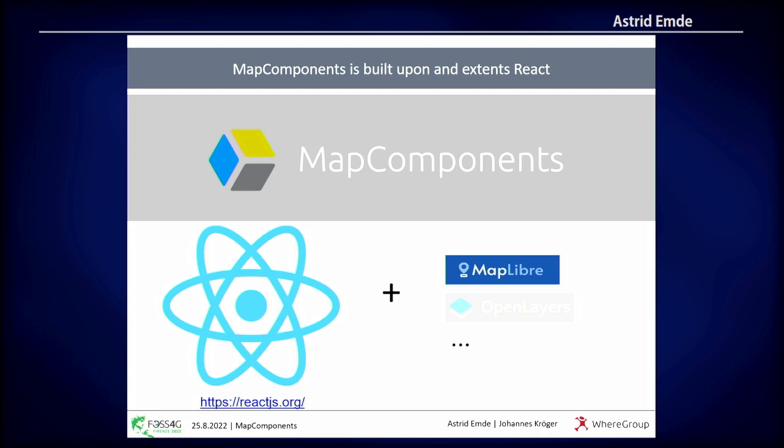And as we want to talk about maps, you can also create map elements or map-associated elements, like layers or tools. We provide a catalog of React components for working with maps, and the geospatial component, as you can see here on the slides, is provided via MapLibre with all its great functionality.